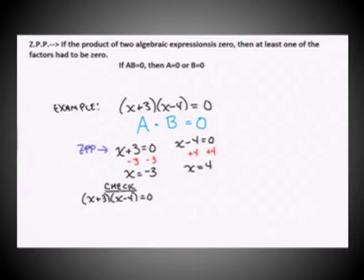And in this first one, I'm going to plug in the value negative three, wherever I see x. So I have negative three plus three times negative three minus four. And I'm going to see if that equals zero. Negative three plus three is zero. Negative three minus four is negative seven.